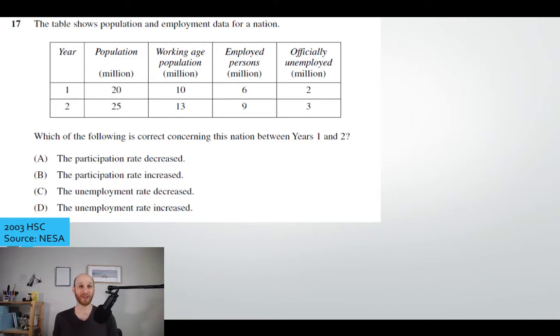Here we have an example taken from the 2003 HSC in terms of calculating employment and unemployment. So what we've got here is the population, the working age population, employed and unemployed. So if I'm looking at this question, I might say okay, population - that's the whole country. Working age - that's everyone 15 plus. Employed - people who have jobs. Officially unemployed - they're seeking work. So what we have to do is work out which one of these is the correct answer.